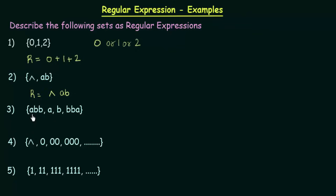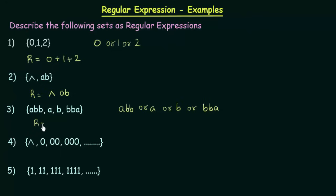Let's come to the third one. In the third one, we have the symbols ABBA, A, B, and BBA. This means it can be anything like ABBA or A or B or BBA — any of these symbols can be present in the set or language. How do we write the regular expression? It is very simple: since it is an 'or', you just use the plus symbol: R = ABBA + A + B + BBA.